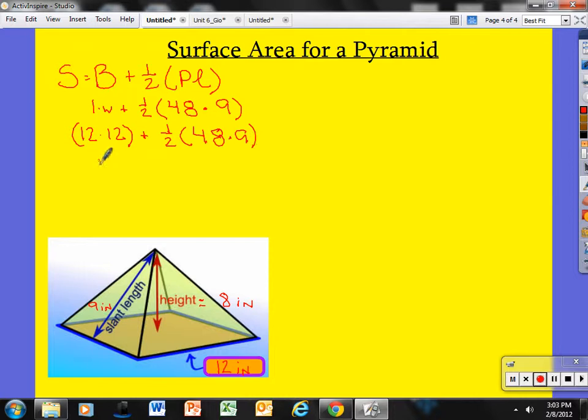If I take a look, I have 12 times 12 gives me 144 plus a half. If I take my calculator here, 48 times 9 will give me 432.